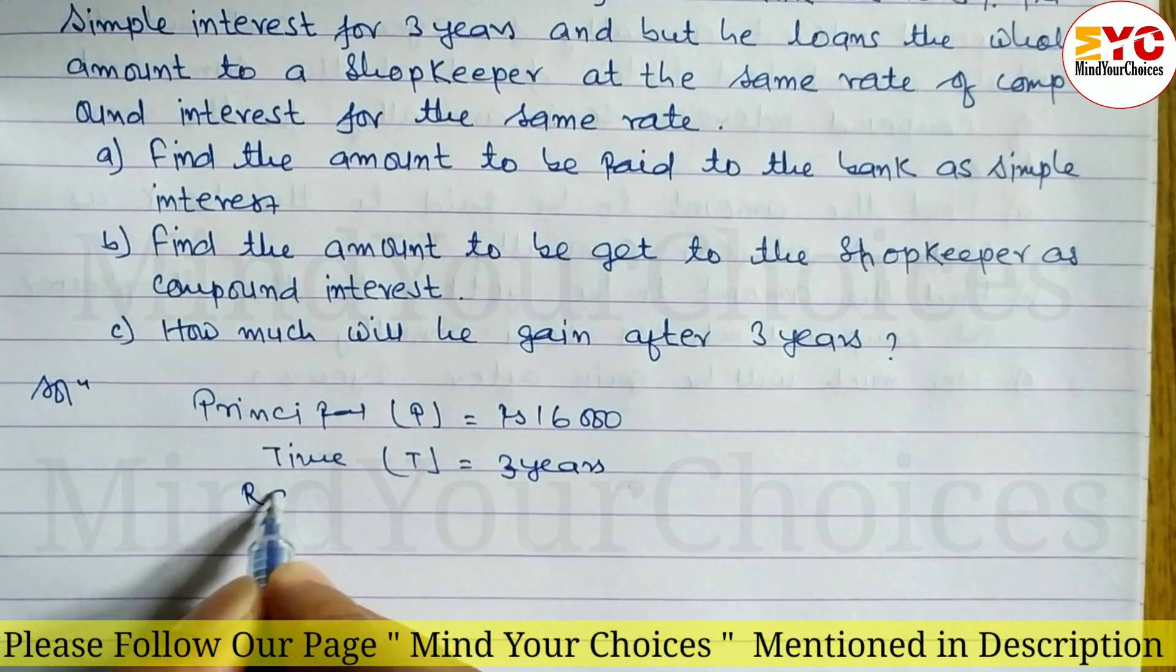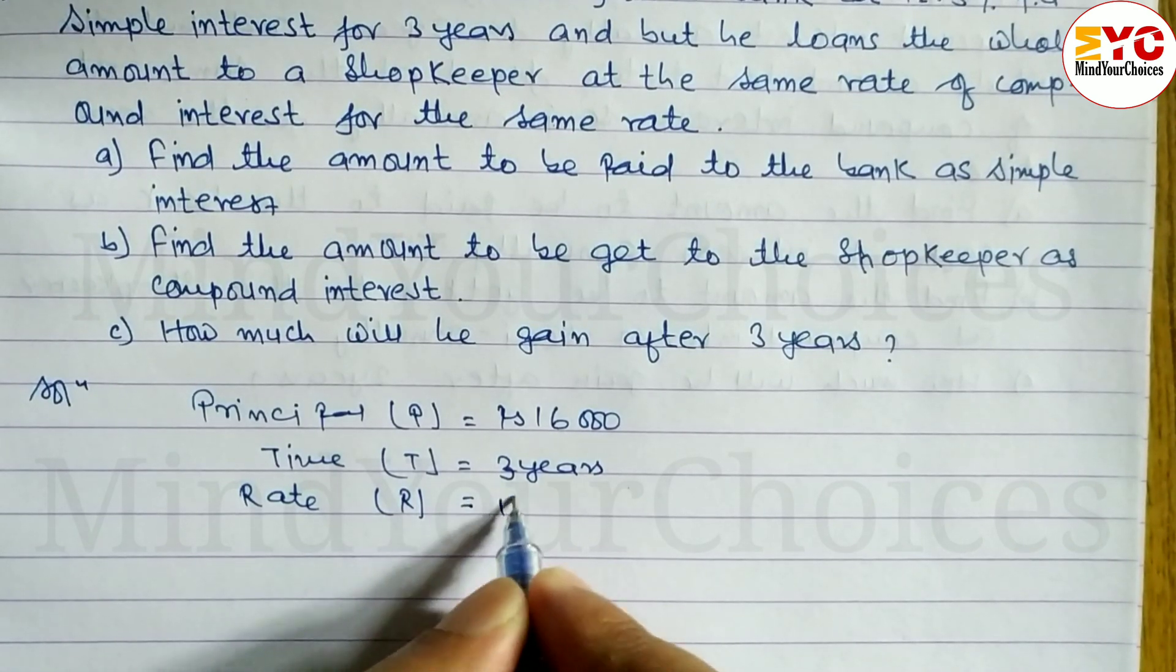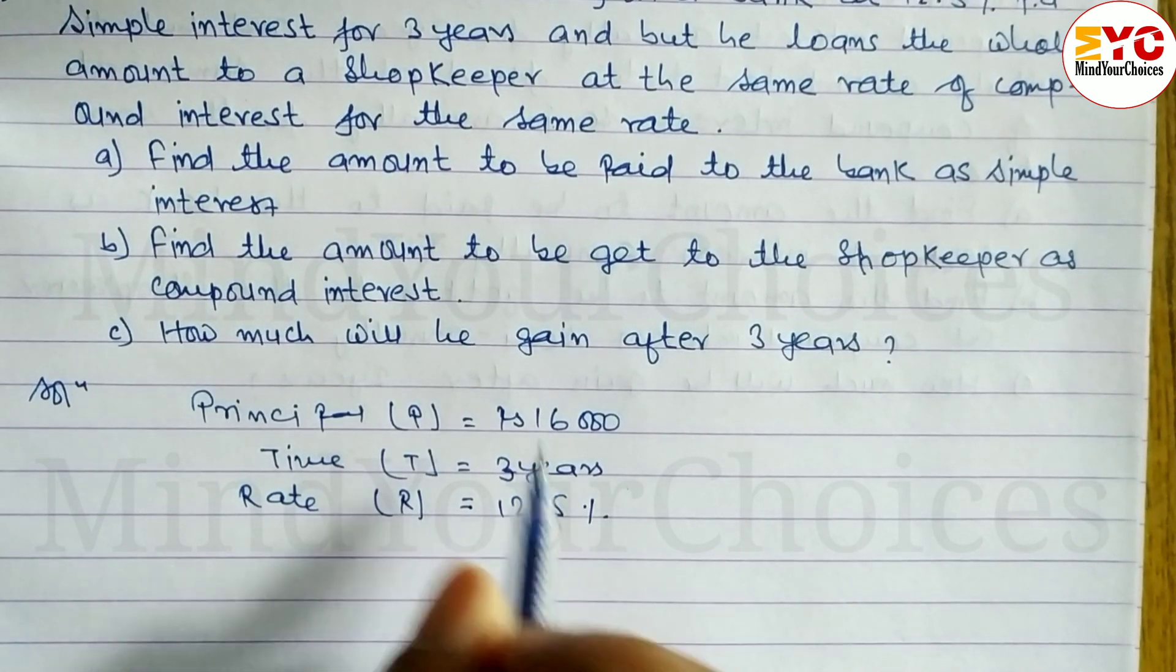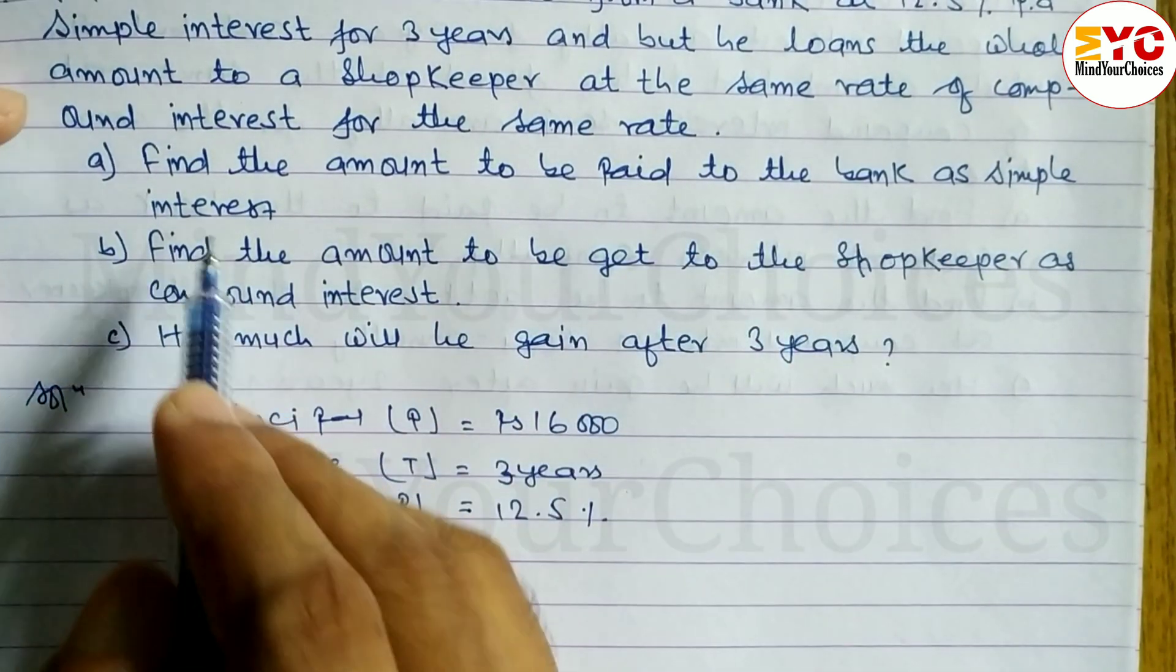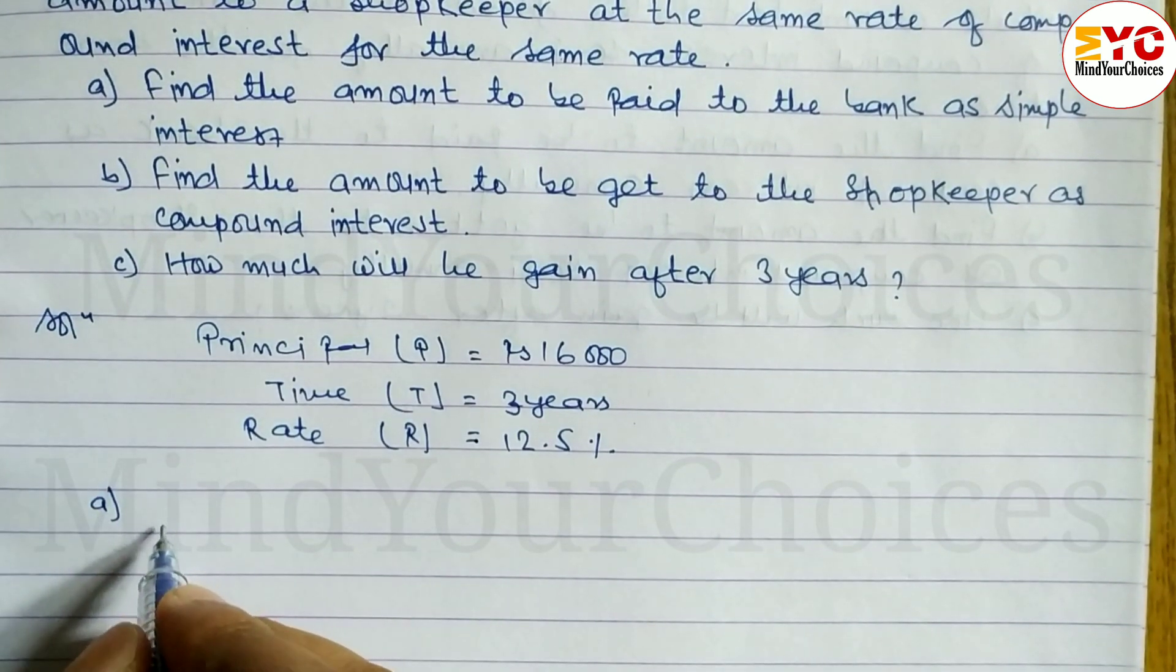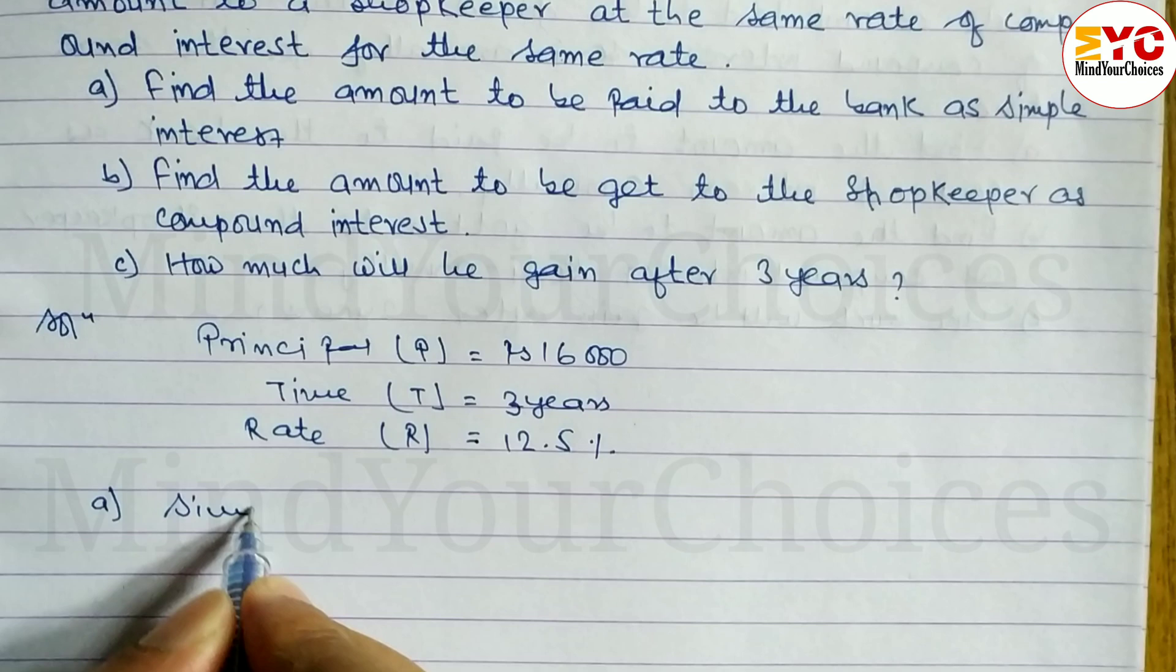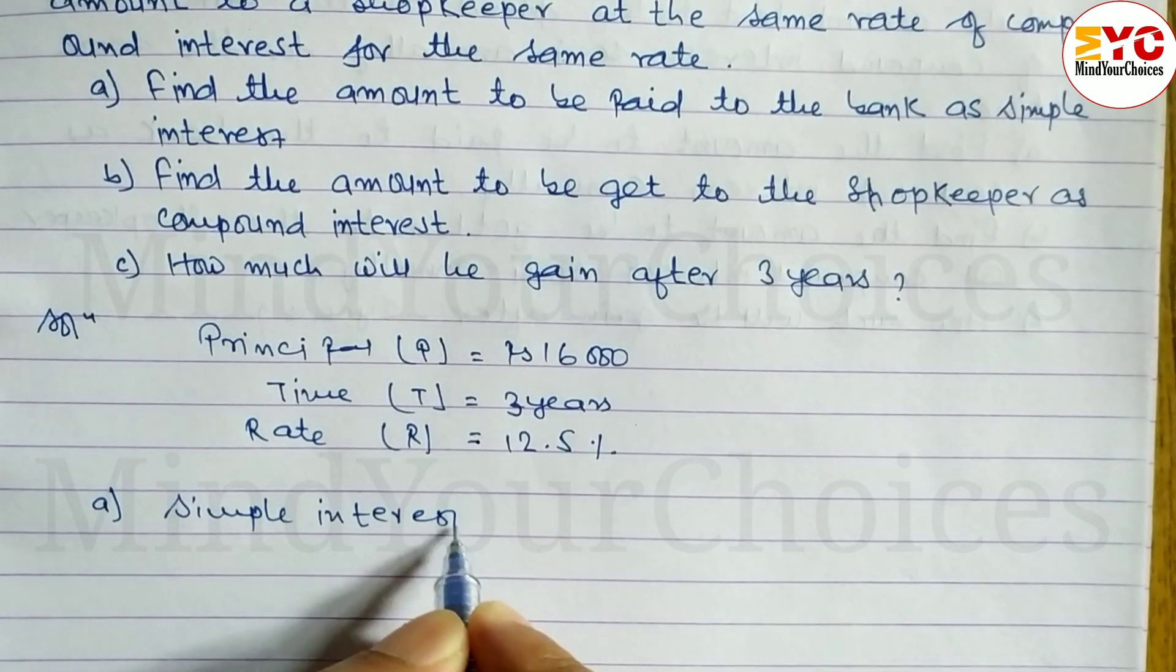Question (a): Find the amount to be paid to the bank as simple interest. The formula for simple interest is SI = PTR/100.